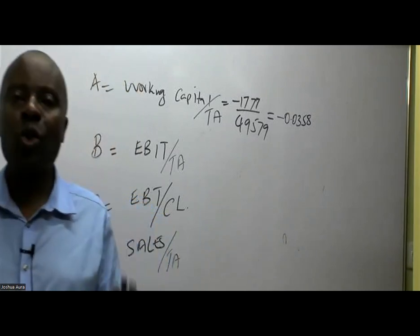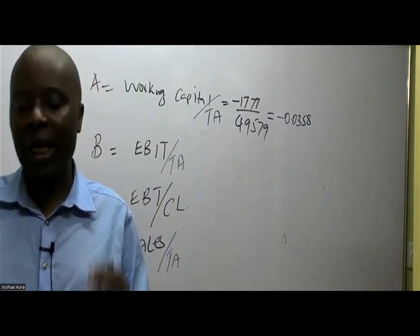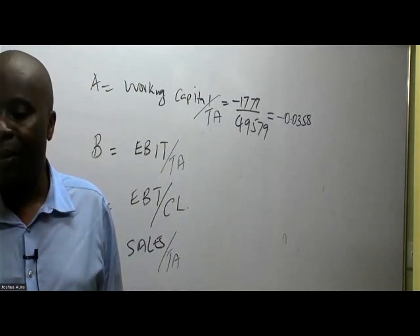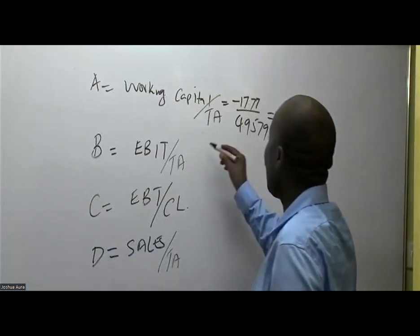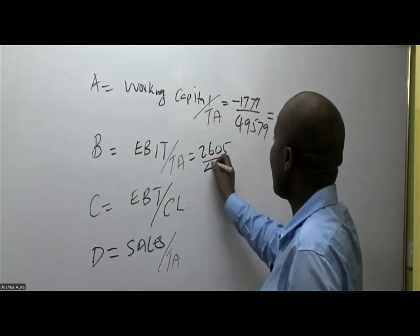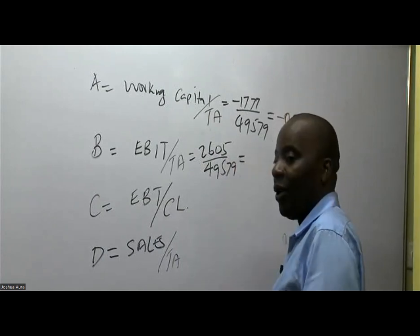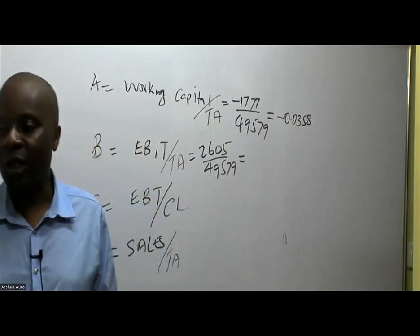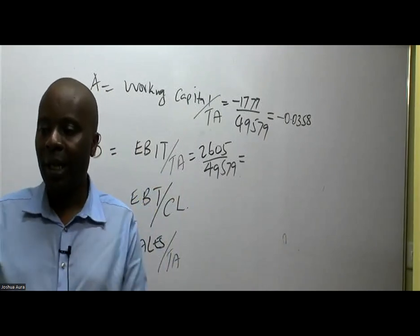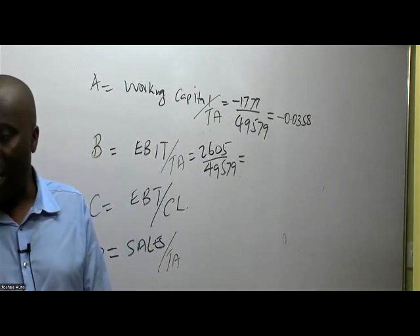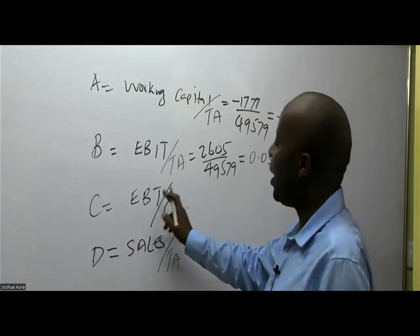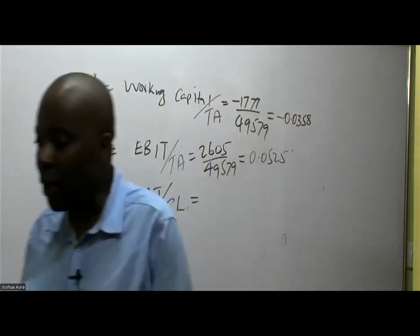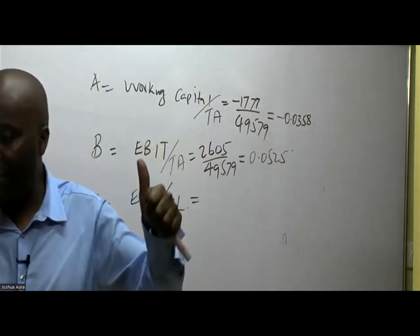Isaac Obai gives me 0.0525 for ratio B, and Lynette confirms the same. So ratio B = 0.0525. Now for ratio C, I want a good student to give me EBT — earnings before tax. Many students in this semester were not able to get EBT. They could not get earnings before tax. Let's work it out together.